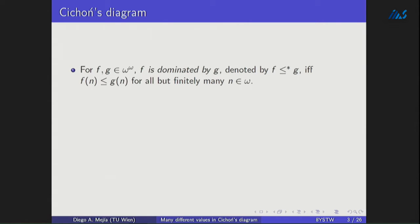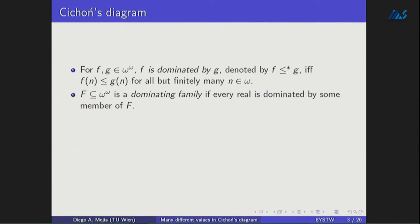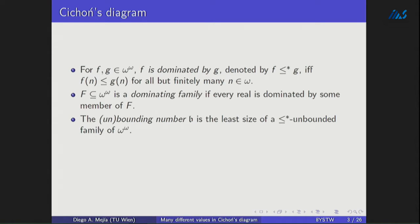To introduce some other invariants, we define the following relations. For f and g functions from ω to ω, we say that f is dominated by g if and only if f(n) ≤ g(n) for almost all natural numbers. For this relation, we define a dominating family: a set of reals is a dominating family if any real of the space is dominated by some member of the family. With this, we define the bounding number, which is the least size of a family of reals that cannot be bounded above by some real with this relation, and dually, the dominating number d, which is the least size of a dominating family.